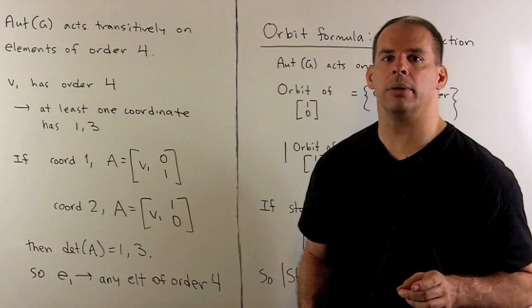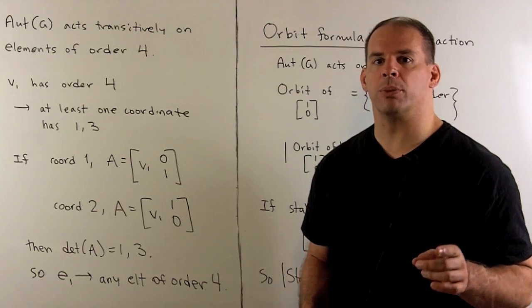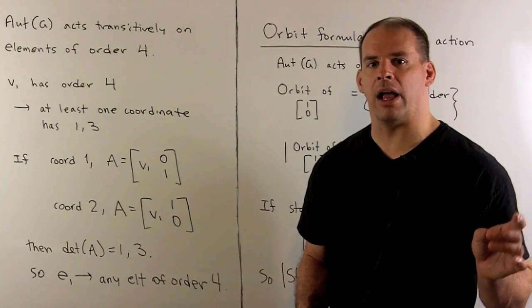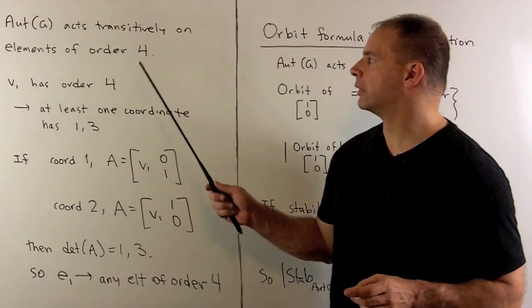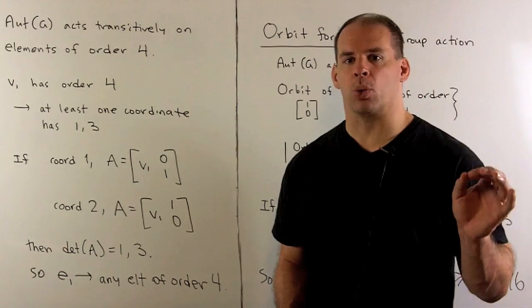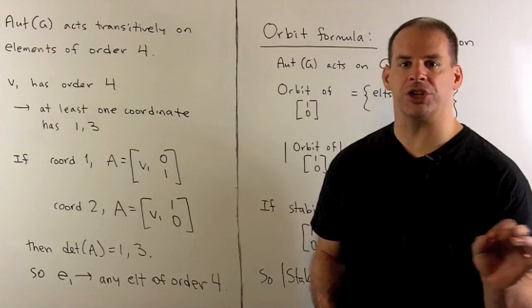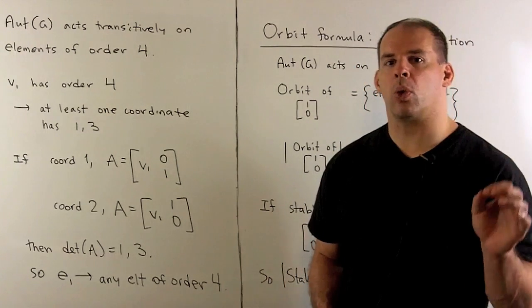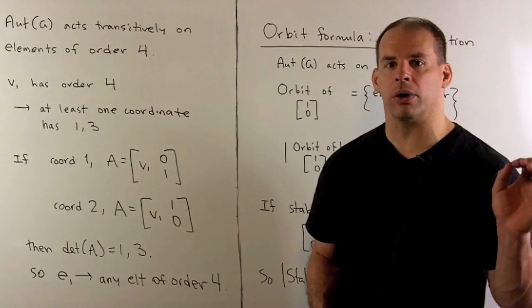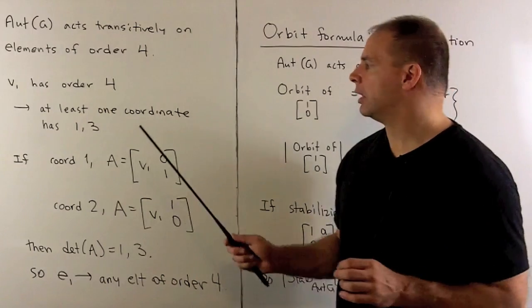Using the last board, we could show that the automorphism group acts transitively on the elements of order 4. So, we suppose that V1 has order 4. Going back to the board with a partition, at least one of the coordinates of V1 is a 1 or a 3.